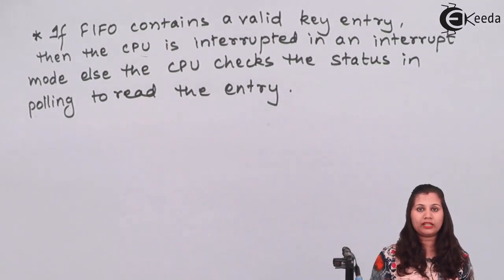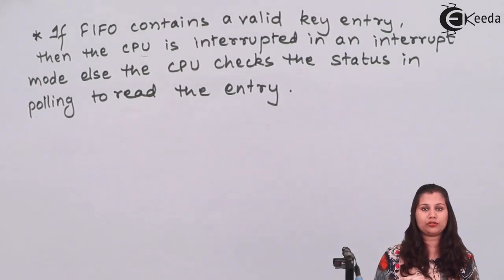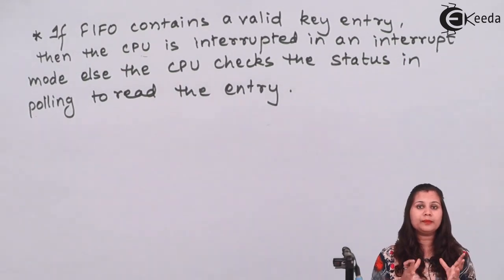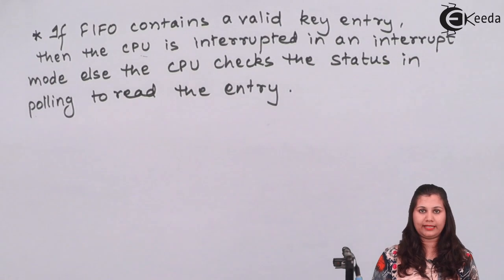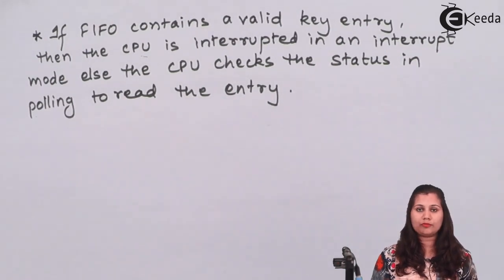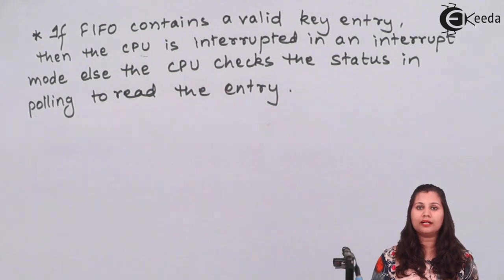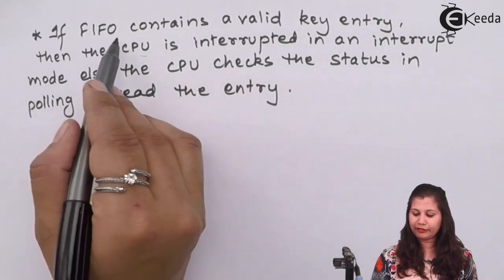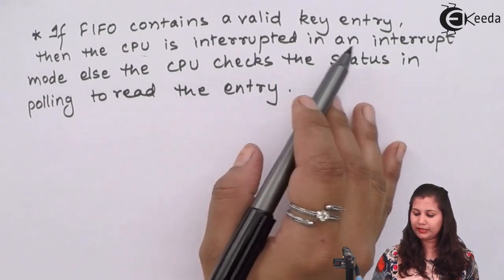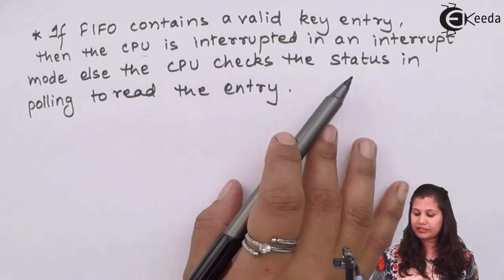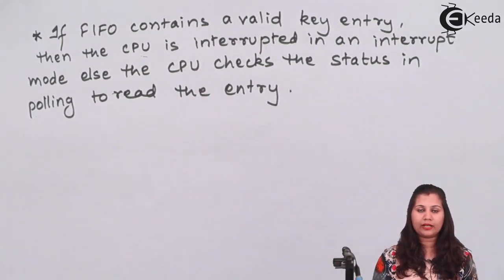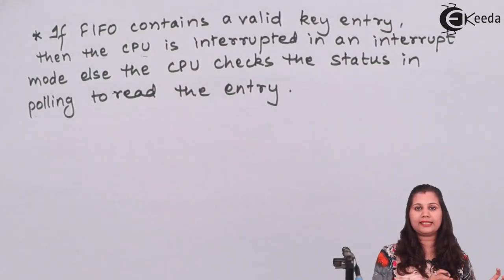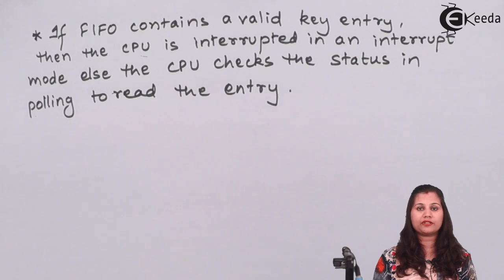As explained earlier, there are two modes for interfacing the keyboard with the CPU: interrupt mode and polling mode. If the FIFO contains a valid key entry, two things can happen: in interrupt mode the CPU is interrupted, or in polling mode the CPU checks the status flag. The CPU then gets the information about which key was pressed and performs the function associated with that key.